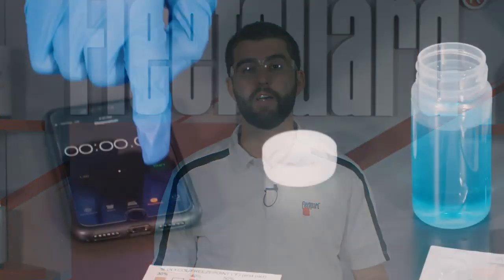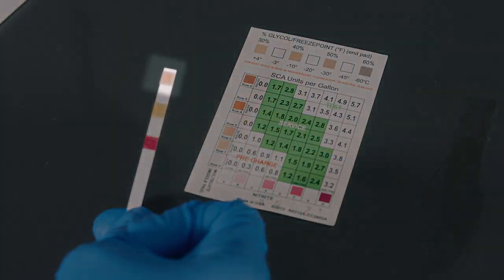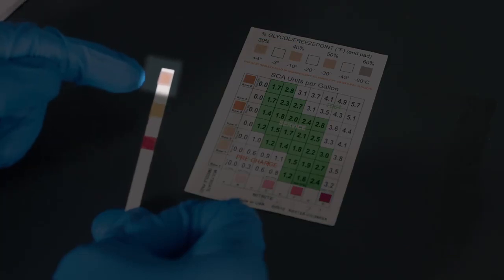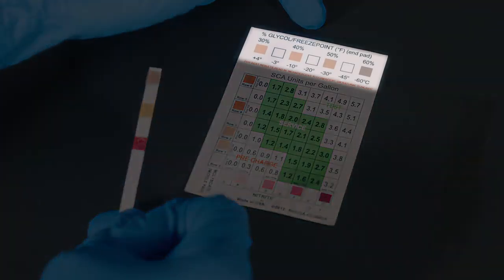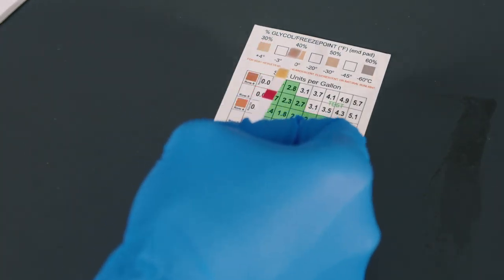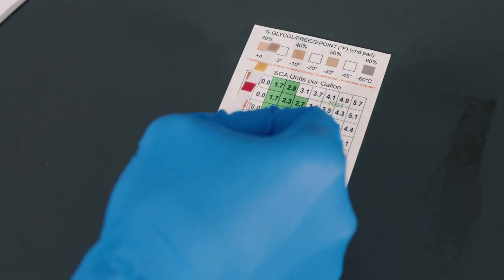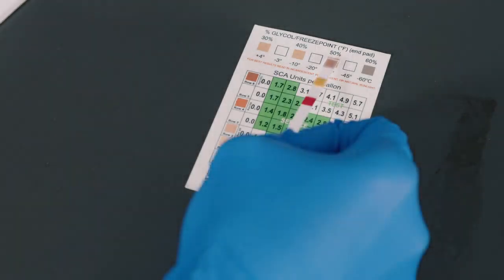Once 45 seconds has passed, we'll need to read our results within 30 seconds, so let's get started. To check the percent glycol, hold the chemical pad that is furthest from your hand against the percent glycol and freeze point scale that is included with the strips. You'll need to find the color on the chart that best matches the test strip. For this example, the percent glycol is approximately 50 percent glycol and provides freeze protection down to negative 30 degrees Celsius.